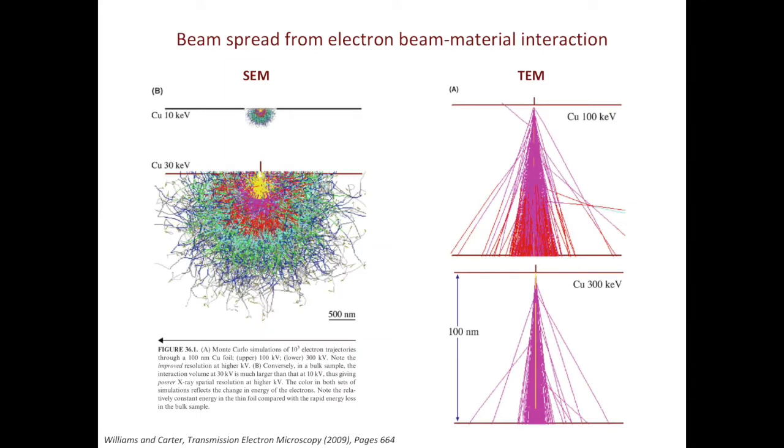Before looking at TEM, let's look at the effect of the beam energy on the interaction volume or beam spread in SEM. The left column shows the Monte Carlo simulation of electron beam interacting with copper. At lower voltage, such as 10 keV, the interaction volume is fairly small and the beam spread is small as well. At higher acceleration voltage, such as 30 keV, the interaction volume is a lot larger and the beam spread is a lot larger as well.